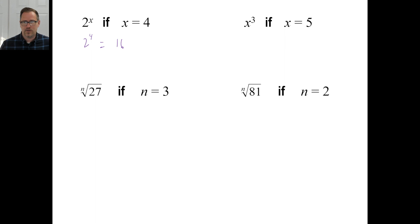This one here. If x is 5, x to the 3rd power. So you're just going to go, okay, well, that's 5 to the 3rd power. Well, 5 times 5 times 5 is 125. There we go.